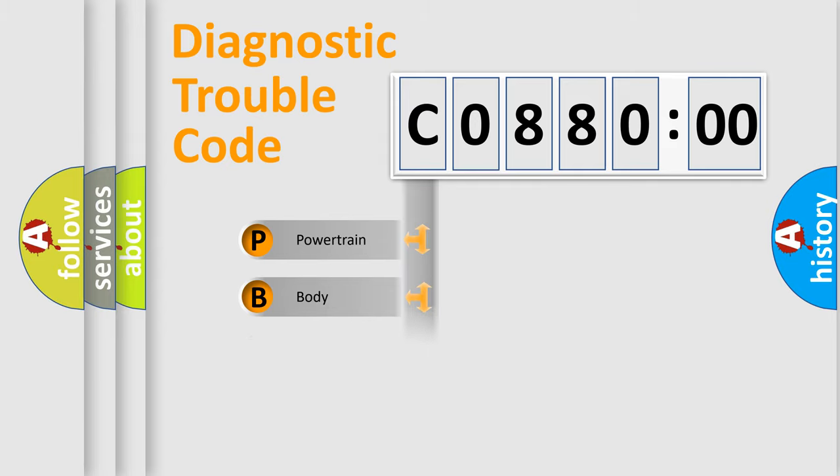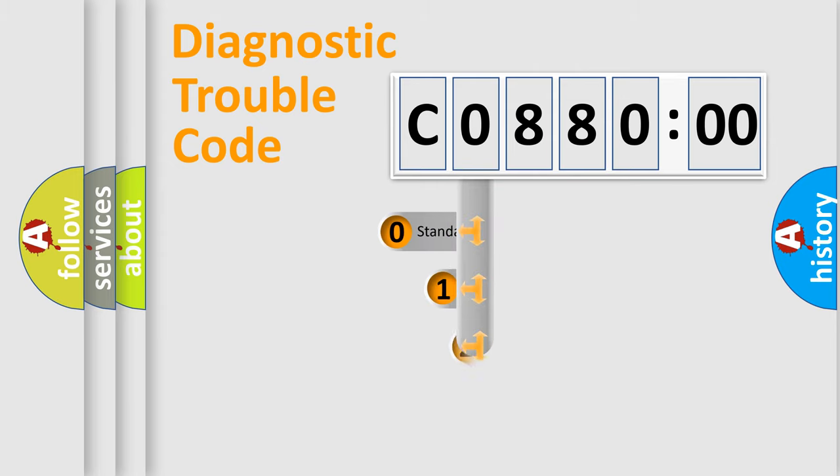Powertrain, Body, Chassis, and Network. This distribution is defined in the first character code.